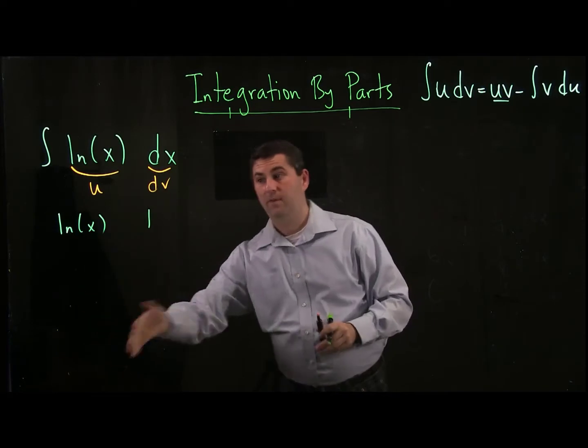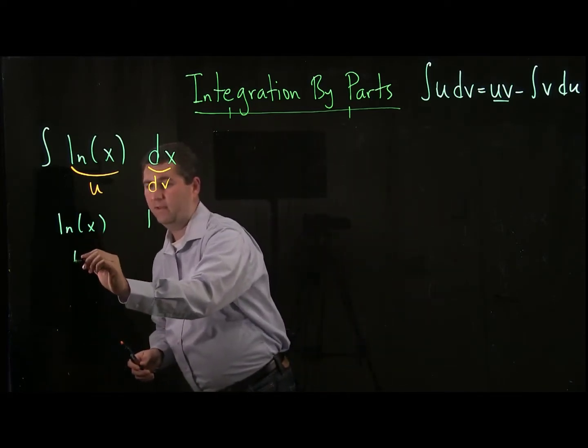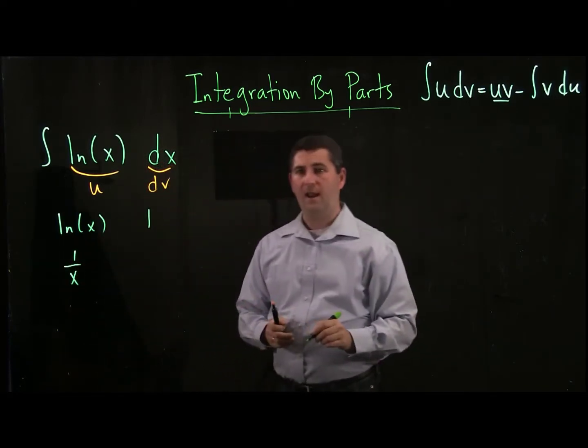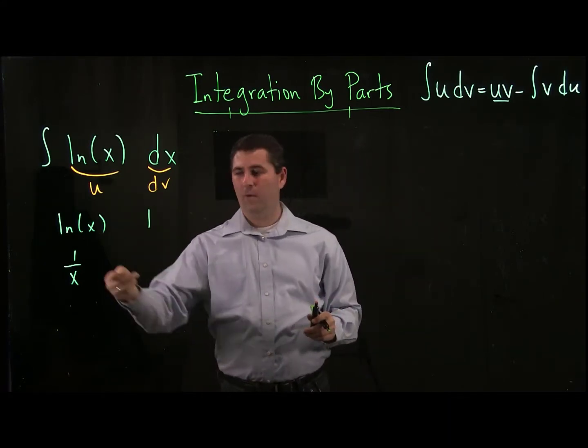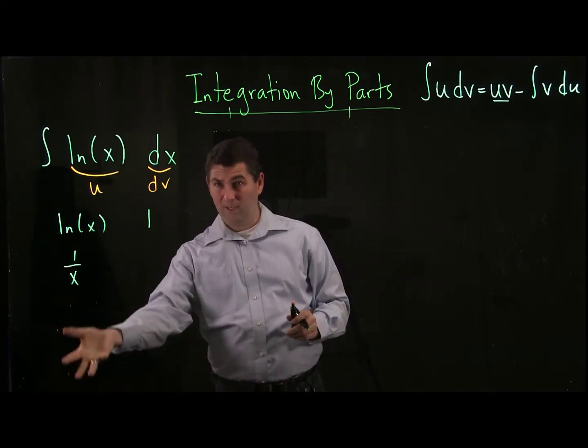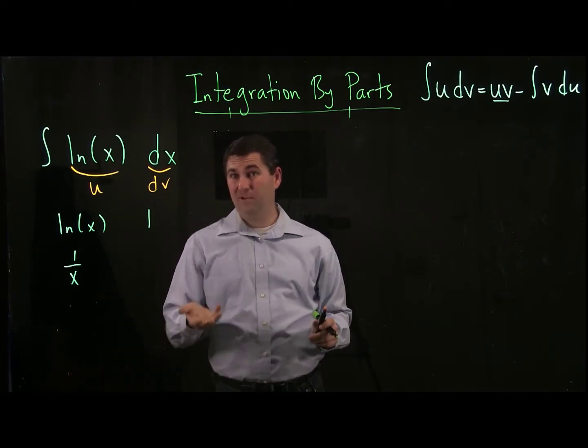The first step is we take the derivative. If I take the derivative of ln of x, I get 1 over x. Now in the previous video when we started taking derivatives, eventually we got to 0. That told us when to stop.